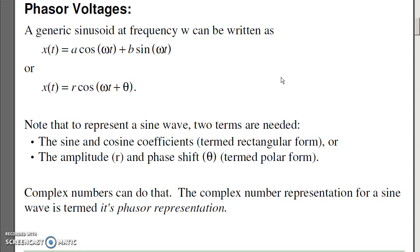For voltages, a generic sine wave has both a real part and a complex part as a cosine and a sine term. For polar form, I can also write it as an amplitude and a phase shift, where omega is the frequency. Note that to represent a sine wave, I need two terms, either the cosine and sine term, or the amplitude and angle. Complex numbers let you do that.